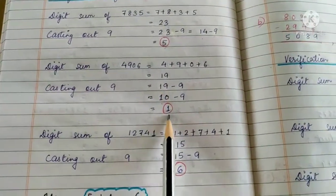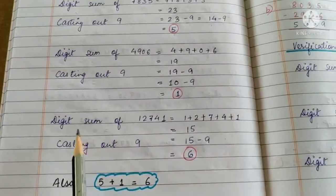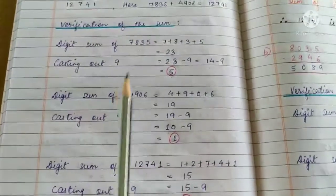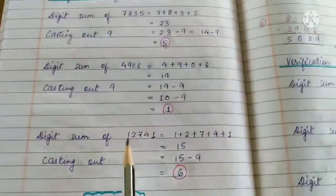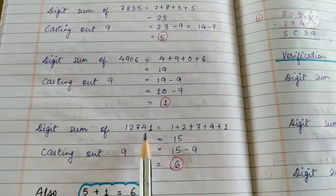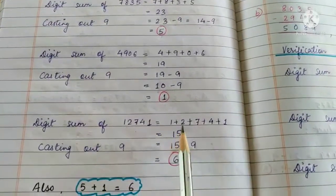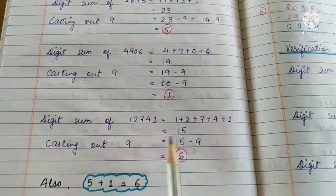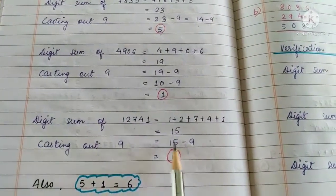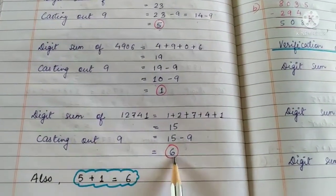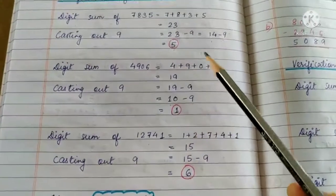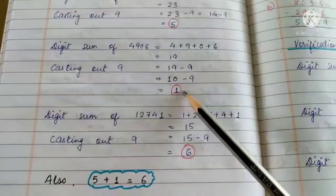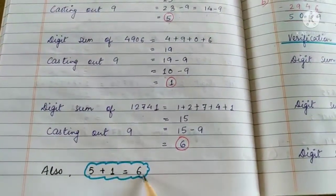We have 1 as the answer. We will also find out the digit sum of the sum, that is the sum obtained by adding these two numbers: 12741. 1 + 2 + 7 + 4 + 1 = 15. Now casting out 9, that is subtracting 9: 15 - 9 = 6. Also, the digit sum of these two addends is 5 + 1 = 6.